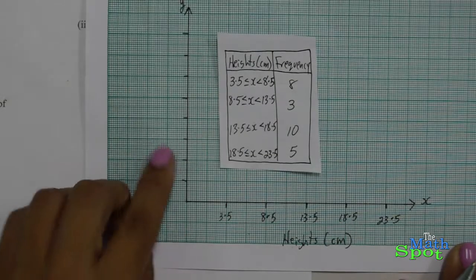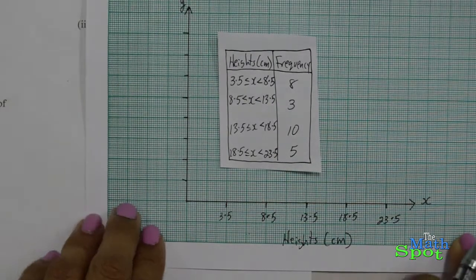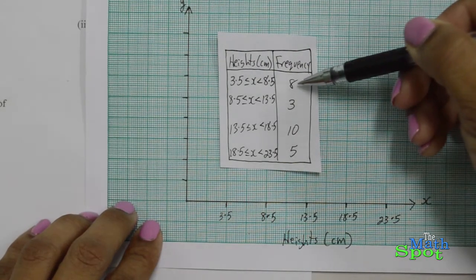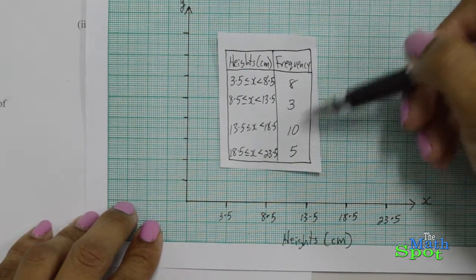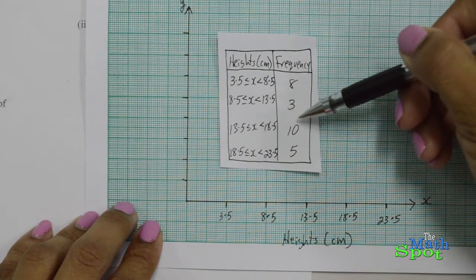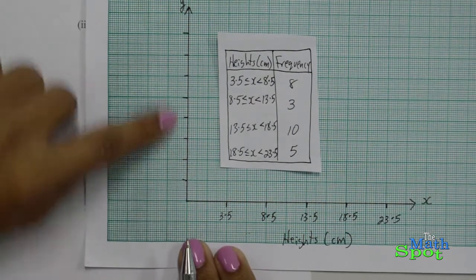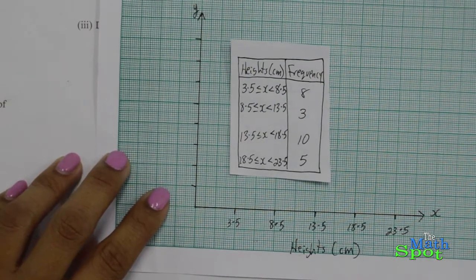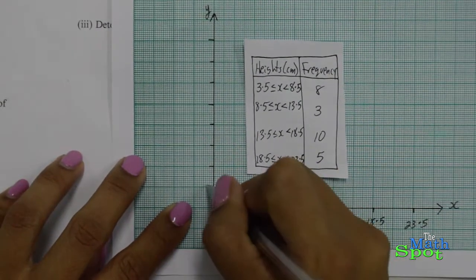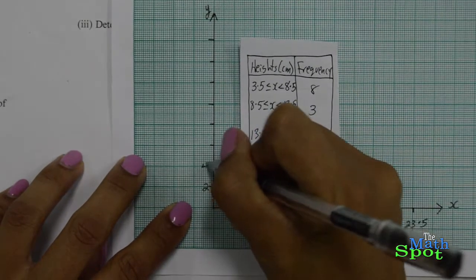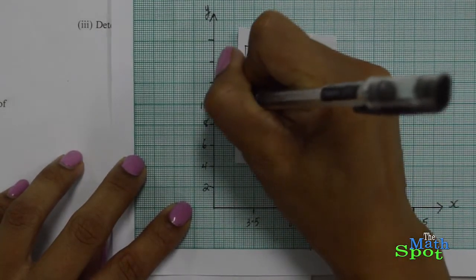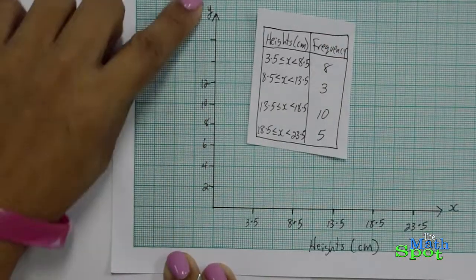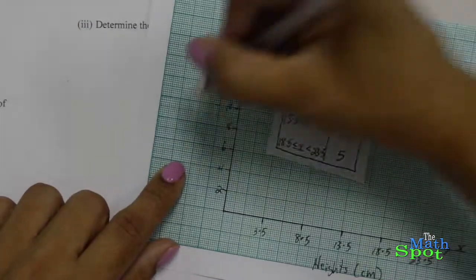Now for the y-axis, the scale is 1 centimeter to represent 2 units. Our frequency values range from 3 up to a highest of 10, so we need to make allowance for all of that. We mark it: 2, 4, 6, 8, 10, 12 — putting an extra one on top. The y-axis represents the frequency.